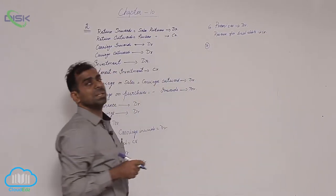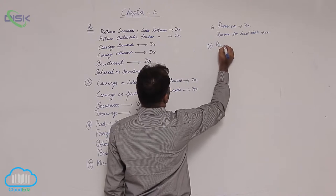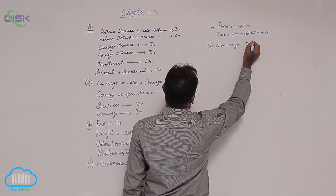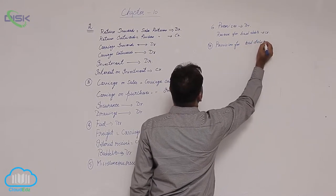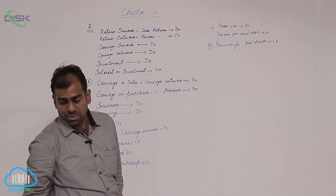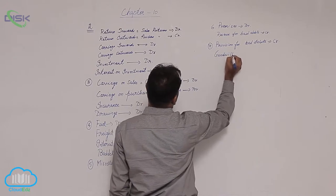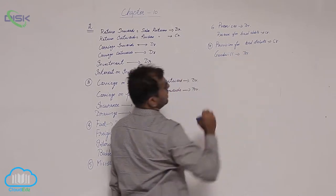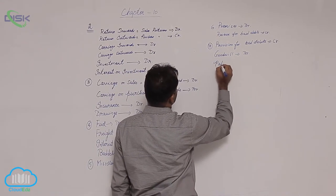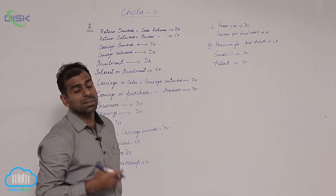Moving on to the seventh problem, we have provision for doubtful debts — also called provision for bad debts. Sometimes it will be given as doubtful debts; this shows credit balance, remember. Next, you have goodwill, which is called an intangible asset. Because it is an asset, it shows debit balance. Same with patents — patents are also examples of intangible assets, so they show debit balance.